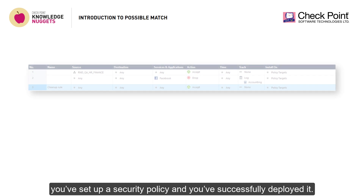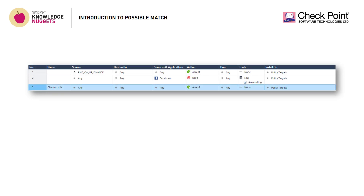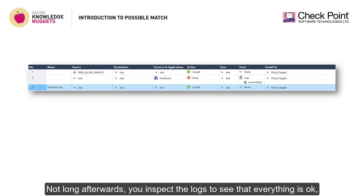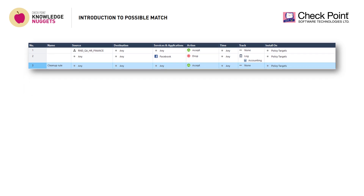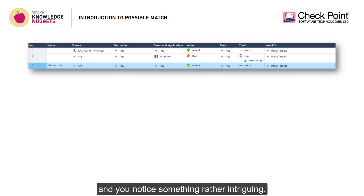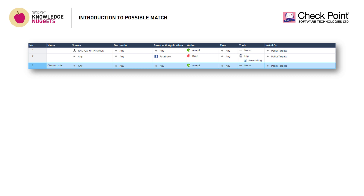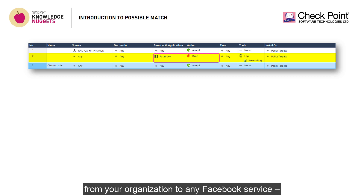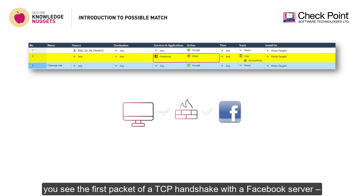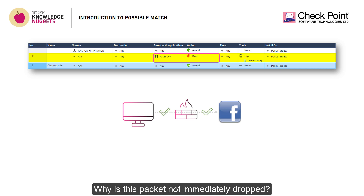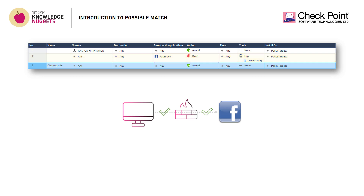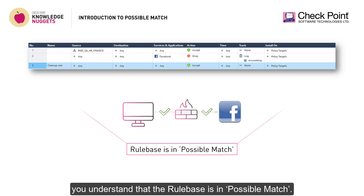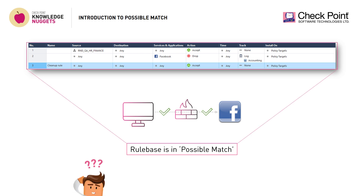You've set up a security policy and you've successfully deployed it. Not long afterwards, you inspect the logs to see that everything's okay, and you notice something rather intriguing. Even though you specifically prohibit communication from your organization to any Facebook service, you see the first packet of a TCP handshake with a Facebook server pass through. Why is this packet not immediately dropped? After you dig in even deeper, you understand that the rule base is in possible match. What's that all about?